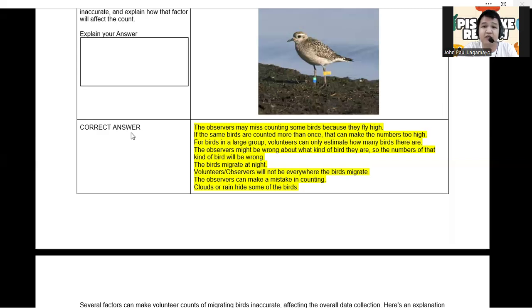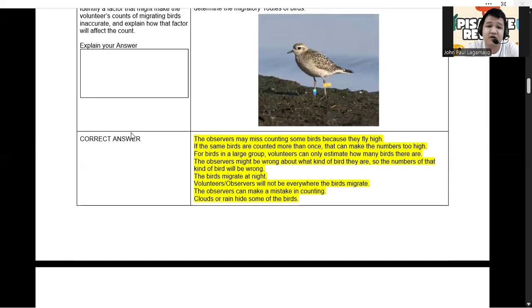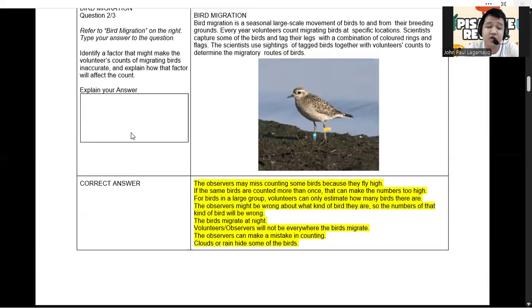The observers might be wrong about what kind of bird they are, so the numbers of that kind of bird will be wrong. So that is another answer. The birds migrate at night. Yeah, there's a possibility of that. Volunteers or observers will not be everywhere the birds migrate. The observers can make a small mistake in counting. And clouds or rain can hide some of the birds.